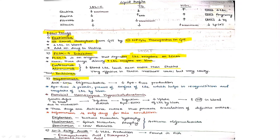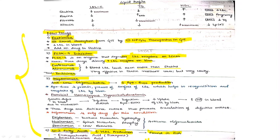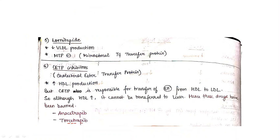Mipomersen is an antisense oligonucleotide that decreases apolipoprotein B-100 production. Omega-3 fatty acids decrease VLDL production and are found in fish. These are newer drugs; remember their names.